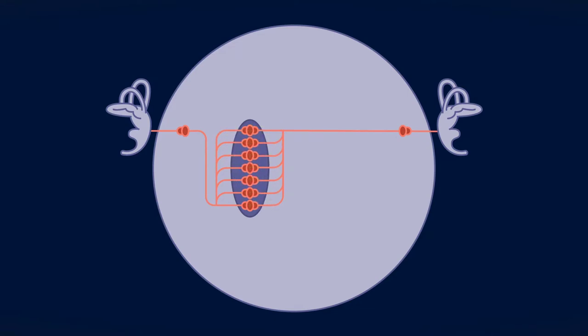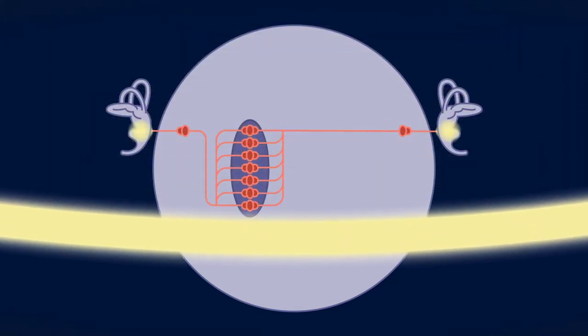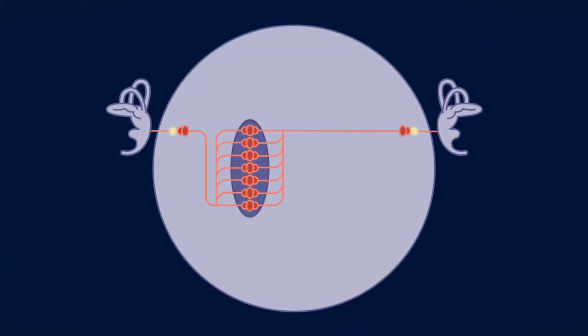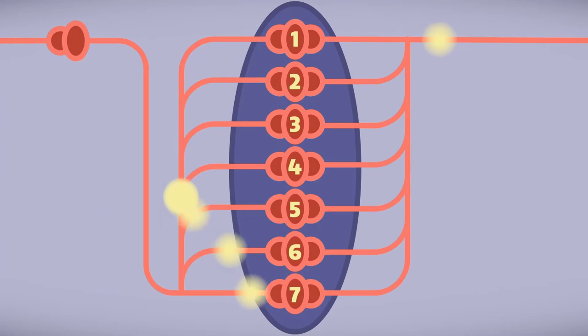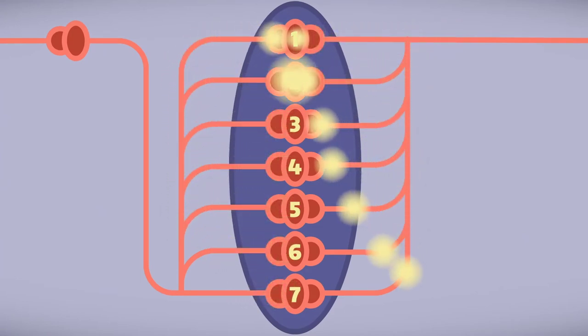so you can compare the timing of action potentials generated at the left and right ears. And these action potentials must travel along delay lines before they reach neurons that only respond if they perceive input simultaneously from the left and right side.